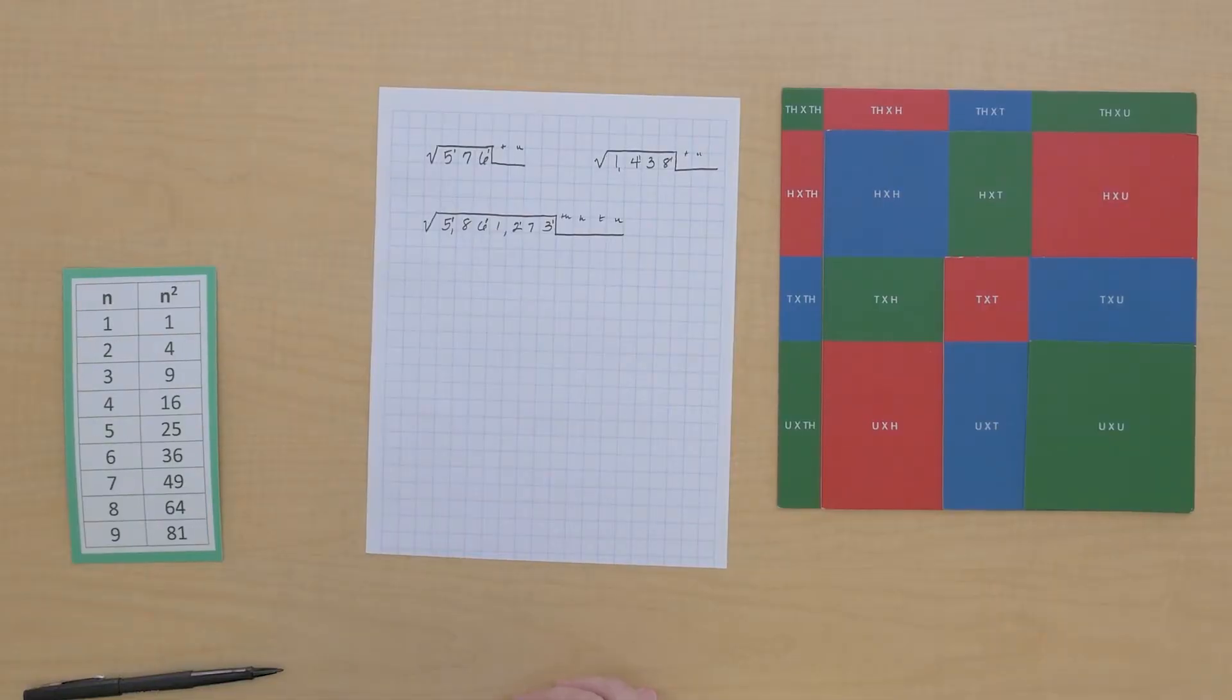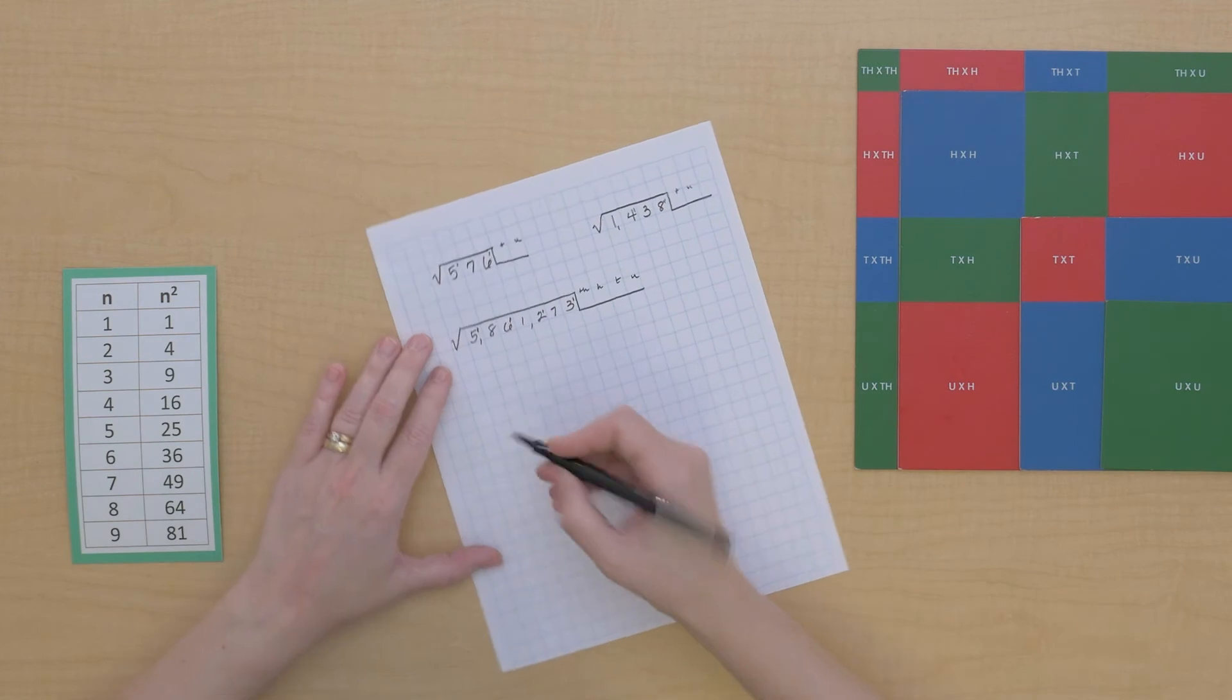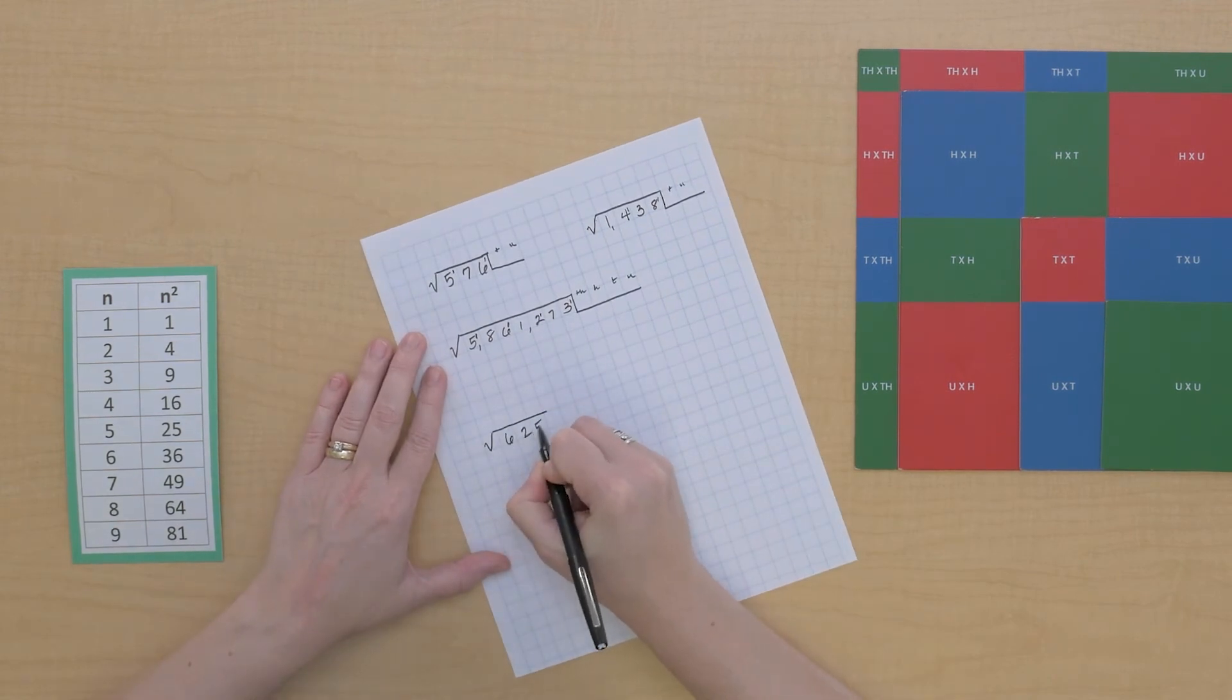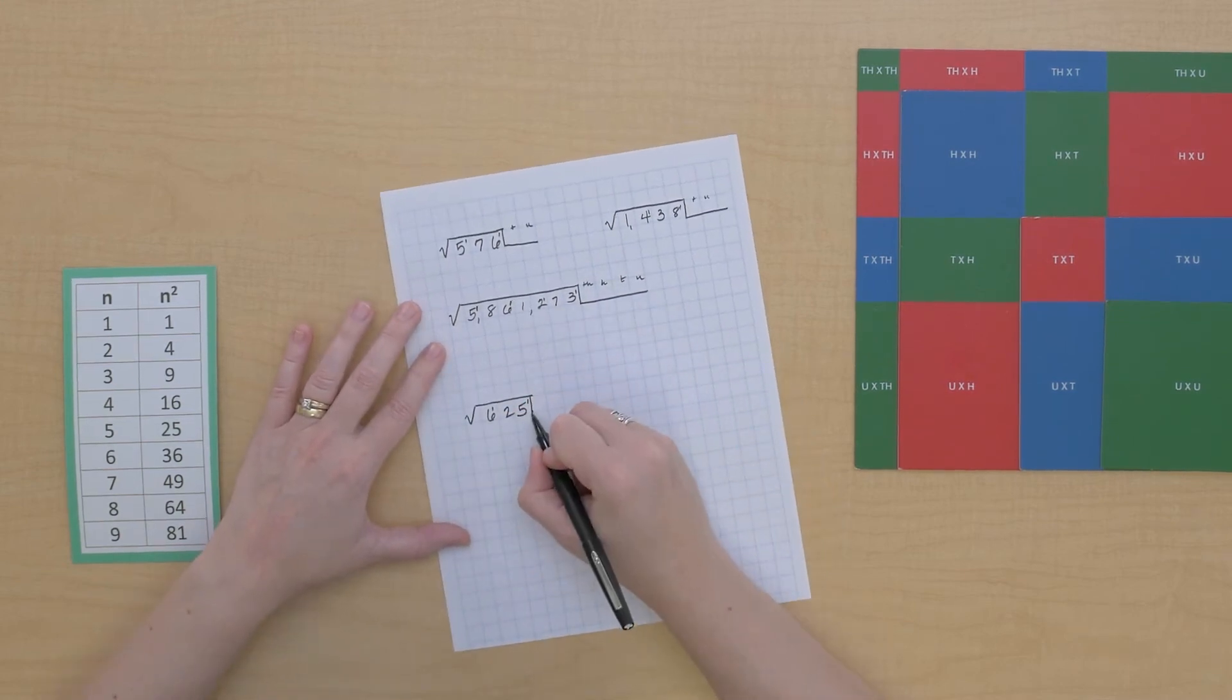So when we are going to find the square root of a number we need to mark how many digits we're going to have in our root from the original number. So let's try that. Let's find the square root of 625.